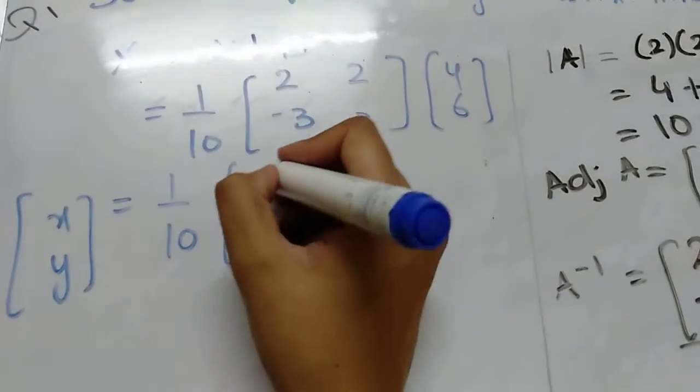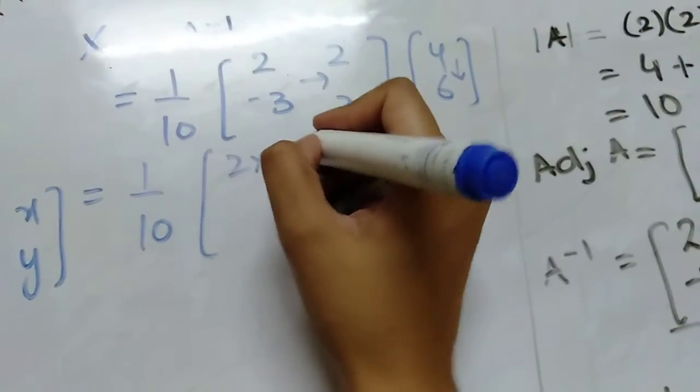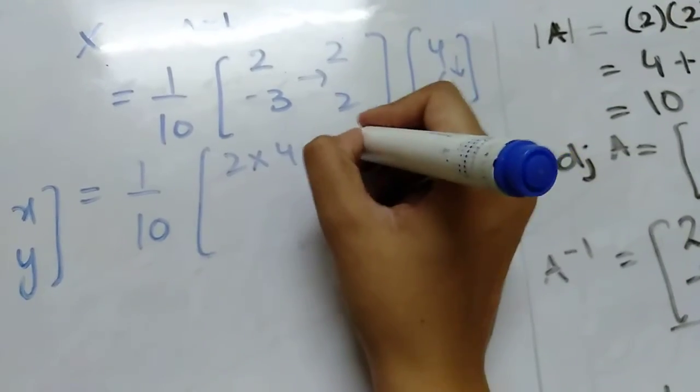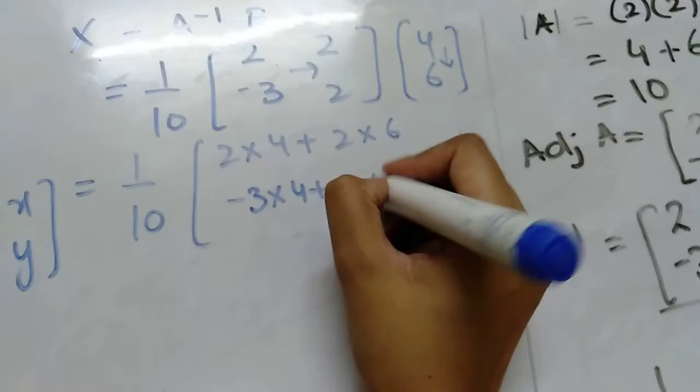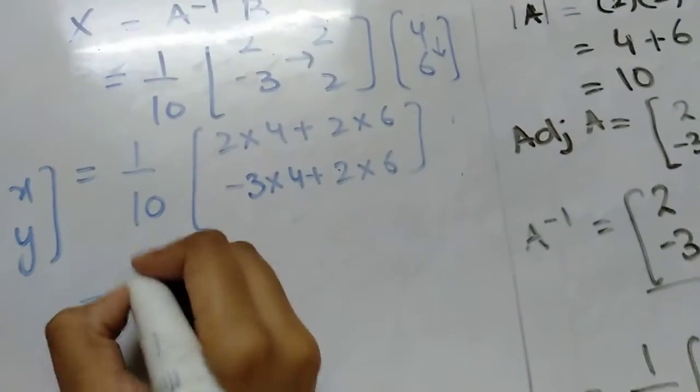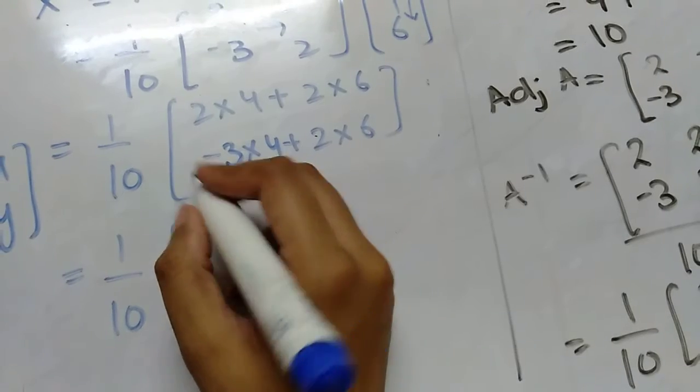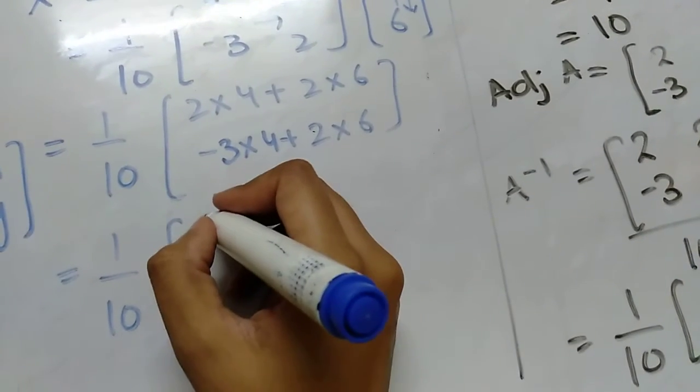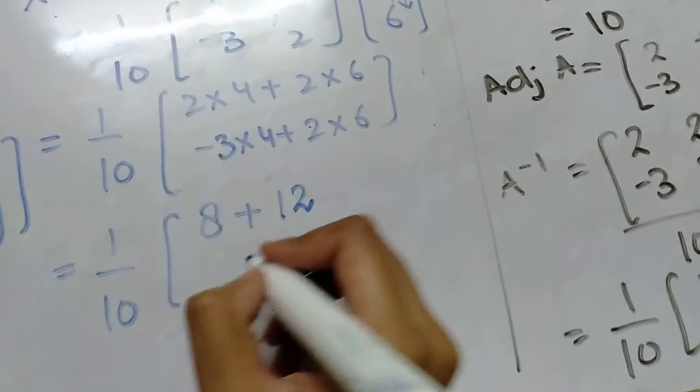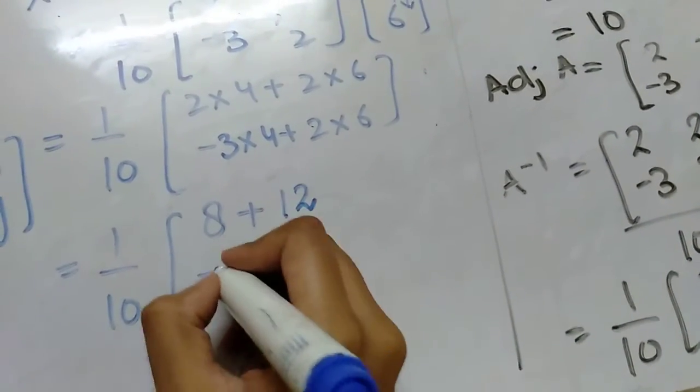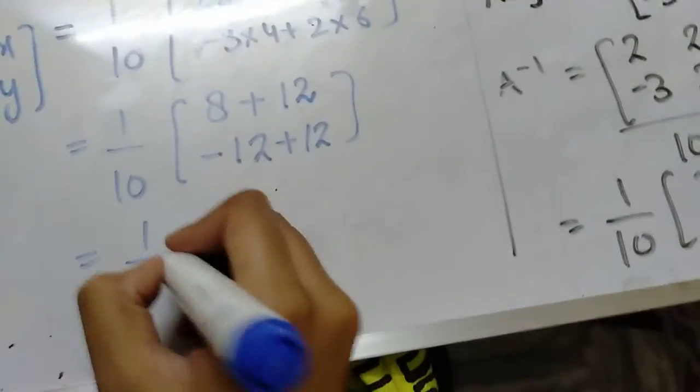Now we will multiply. We will simply multiply the first row with the first column: 2 into 4 plus 2 into 6, and minus 3 into 4 plus 2 into 6. Then we will apply this 10 inside the matrix. So it's 20 and 0. Now we will apply the 10 inside the matrix: 20 by 10 and 0 by 10. So our answer is 2 and 0.